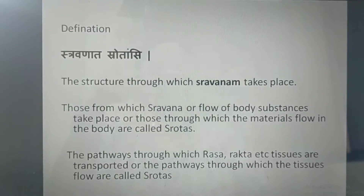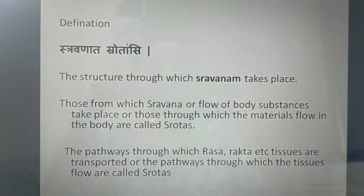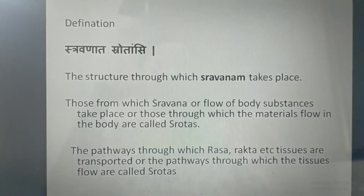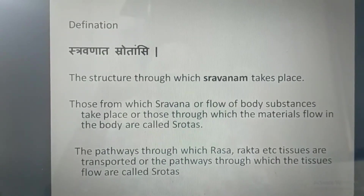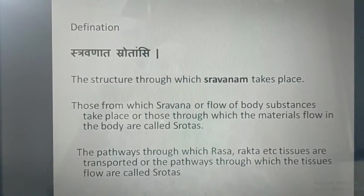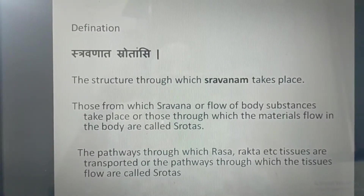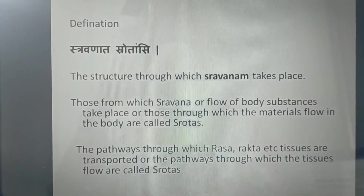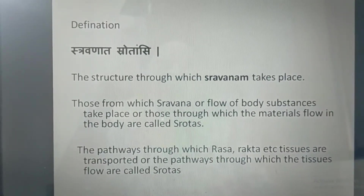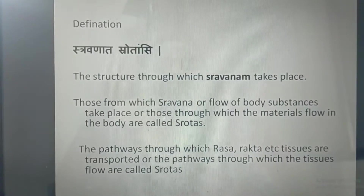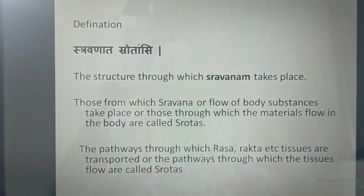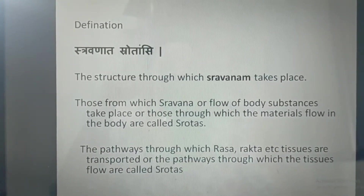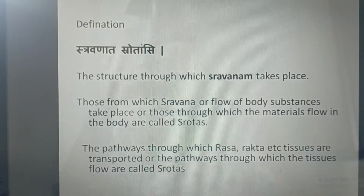First we will see the definition of Srotas. What is Srotas? So Sravanata Srotanshi — the structure through which Sravanam takes place is called the Srotas. Sravanam means oozing, filtration, or permeation. Those from which the flow of body substances takes place, or those through which materials flow in the body, are called Srotas. The pathways through which Ras, Rakt, and other Dhatus are transported are called Srotas.